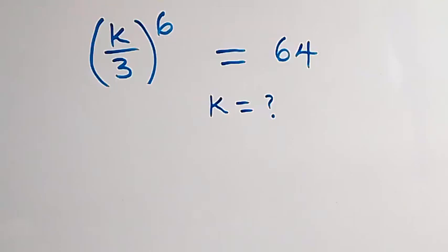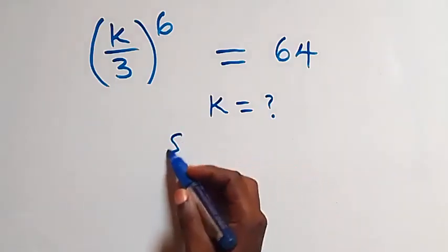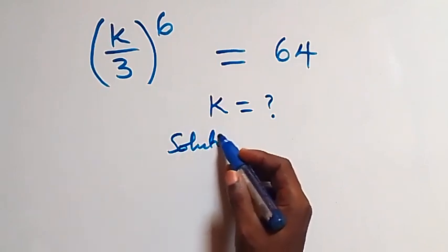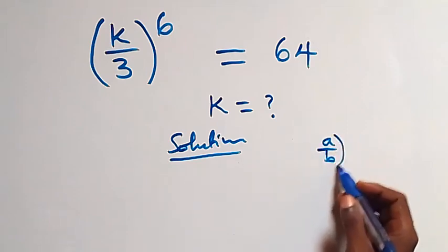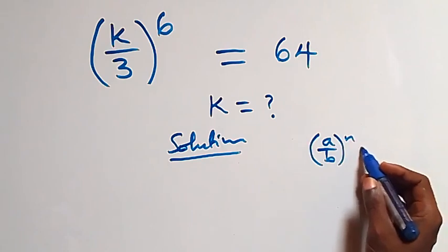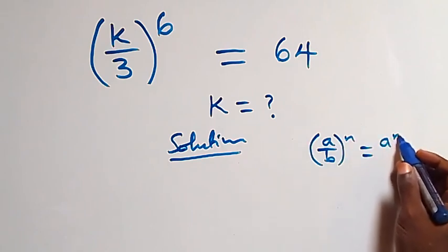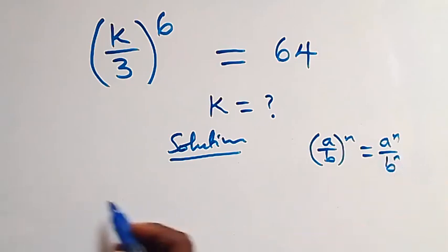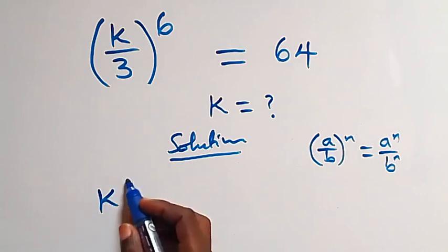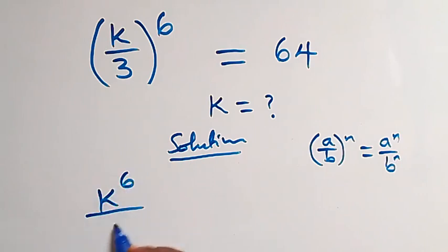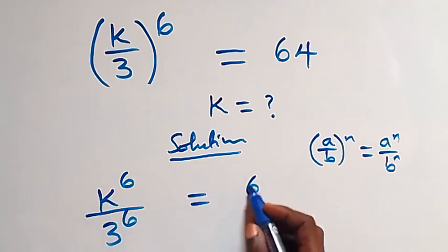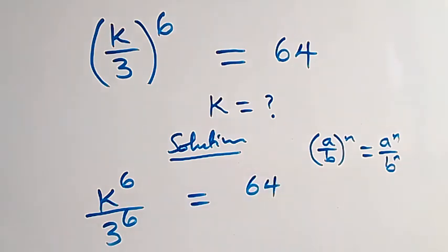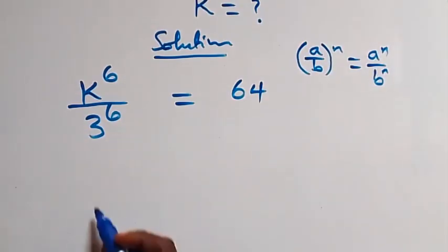Hello, you're welcome. How to solve this nice exponential equation. Following the law of indices: (a/b) raised to power n equals a raised to power n over b raised to power n, what we have here can be written as k raised to power 6 over 3 raised to power 6, equals 64 on this side.